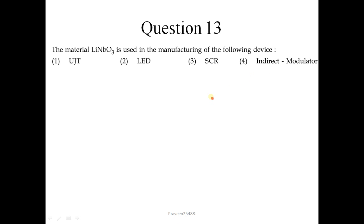Question 13: The material LiNbO3 which is lithium niobate is used in the manufacturing of the following device. This is very important material used for optical waveguides and generally is used as a direct modulator. So correct option is 4.